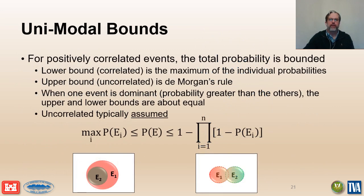Correlation can affect the estimated total probability for the union of events. When the events have perfect positive correlation, unimodal bounds tells us that the total probability will equal the largest of the individual probabilities. When the events are uncorrelated, the total probability is equal to the value calculated by applying De Morgan's rule. In a risk analysis, the uncorrelated case is typically assumed. When one event has a much greater probability than all the other events, the upper and lower bounds will be about the same value.